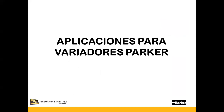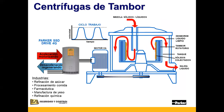Algunas aplicaciones de los variadores Parker que ya han funcionado: se pueden usar en centrífugas de tambor vertical, que se parecen a las lavadoras en la operación centrífuga. Un tambor perforado girando a altas velocidades separa los sólidos en la suspensión de líquido. El tambor es desacelerado y el sustrato sólido es raspado hacia las canastas. Esta aplicación se puede usar en las industrias del azúcar, procesamiento de comida, industria farmacéutica, manufactura de yeso y refinaciones químicas.